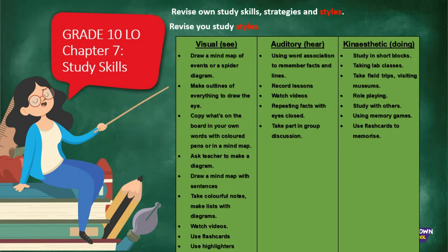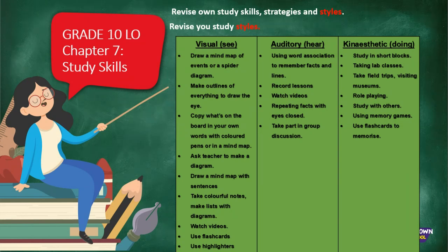Auditory learners are those who learn by hearing information. They use word association to remember facts and lines, they record lessons, watch videos, repeat facts with closed eyes, and take part in group discussions. These learners also use role playing as a learning mechanism. If you're watching this right now, your auditory sense is being stimulated.